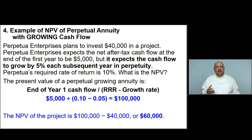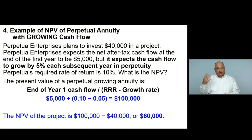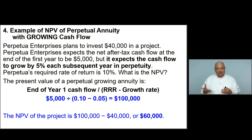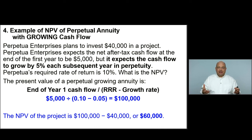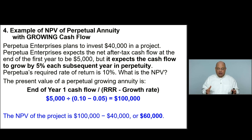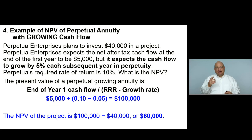We've now looked at several situations requiring net present value calculations: equal annual cash flows, equal annual cash flows with an additional terminal cash flow, a perpetual annuity with constant cash flow, and a perpetual annuity with a growing cash flow. Combined with calculating each year individually, you now have all the tools needed to calculate net present value for whatever situation you encounter on your exam.